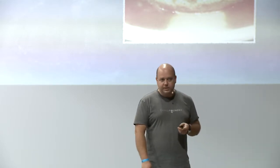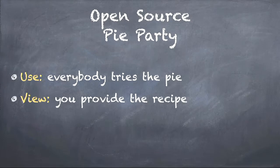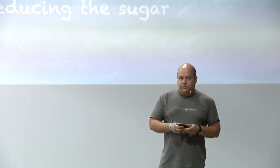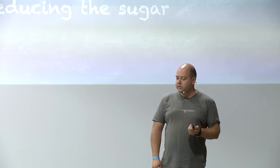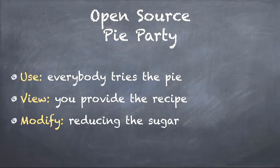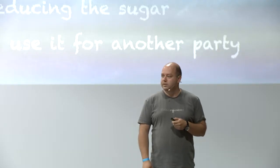И след това ви иска разрешение да я представи на следващата такава сбирка. Като всичките тия неща се връзват доста добре с дефиницията. Например, това, че са опитали тортата е точно аспектът за ползването на софтуера. Това, че са ви питали за рецептата — разглеждането в софтуерния свят — това е да прегледате кода, да отидете в GitHub и да го отворите. Modify аспектът е да промените нещо, да предложите промяна чрез Pull Request и тя да се приеме. И дистрибутирането е да вземете един софтуер и да го дистрибутирате, както намерите за добре.